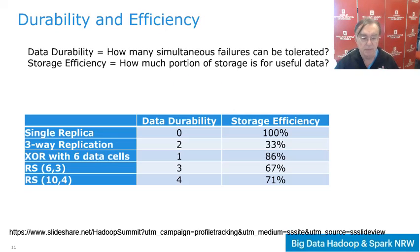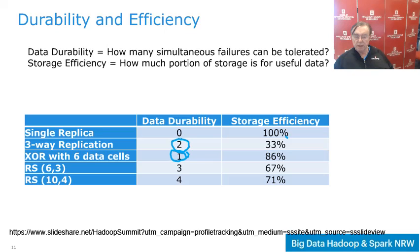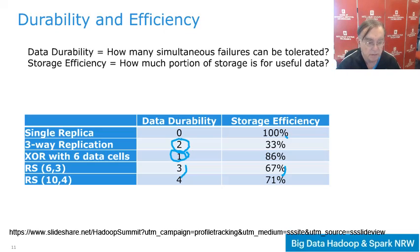Looking at various configurations: three-way replication has a data durability of two. XR with six data cells has a data durability of one and is equivalent to having one copy, but with a storage efficiency of 86%. The various Reed-Solomon codes have storage efficiency around 70% and can achieve data durability of three or four — the higher durability requiring more computation. This is incredibly old technology.